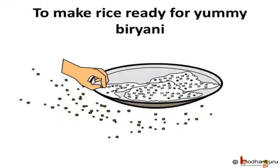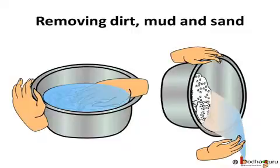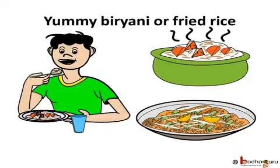The white rice we get can still have some pebbles and dirt mixed with it — we can just pick those few pebbles using our hands. After that, the rice is clean and can be used to make tasty biryani. But before cooking, what does your mother do? Prior to cooking, the rice is soaked in water in a container for some time. Then the container is tilted so that the water along with the dirt, mud, and sand is removed from the container, leaving behind clean rice. Now the rice is cooked to make your yummy biryani or fried rice.